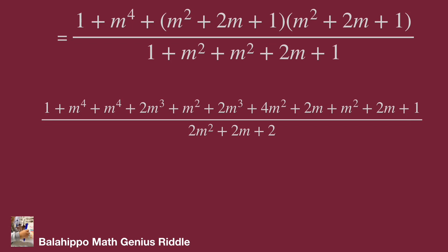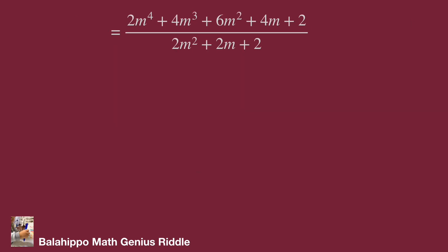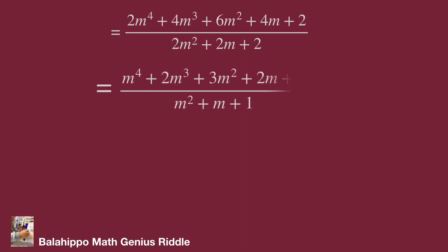Simplifying, the numerator becomes 2m to the power 4 plus 4m cubed plus 4m cubed plus 6m squared plus 4m plus 2, over 2m squared plus 2m plus 2. Dividing both numerator and denominator by 2, we get m to the power 4 plus 2m cubed plus 3m squared plus 2m plus 1 in the numerator.